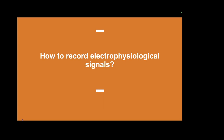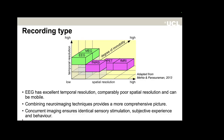Brain activity can be measured with a variety of neuroimaging methods. EEG and MEG measure changes in neural activity with excellent temporal precision, exactly to the millisecond, but with comparably poor spatial resolution at centimeter accuracy. In contrast, fMRI and PET measure regional cerebral blood flow alterations associated with neural activity, providing excellent spatial precision but very low temporal resolution.